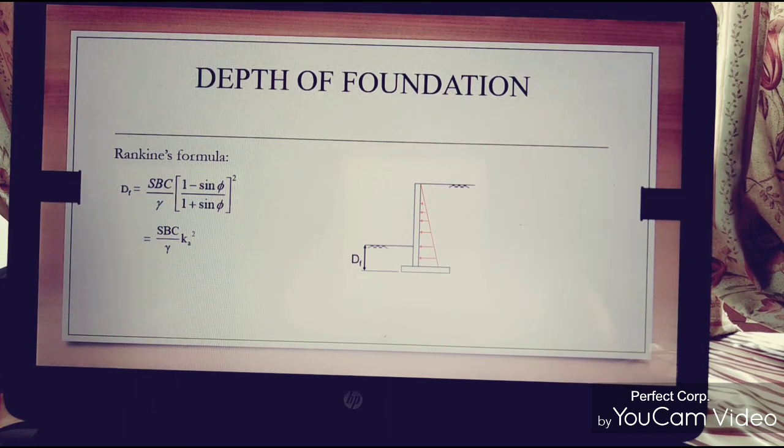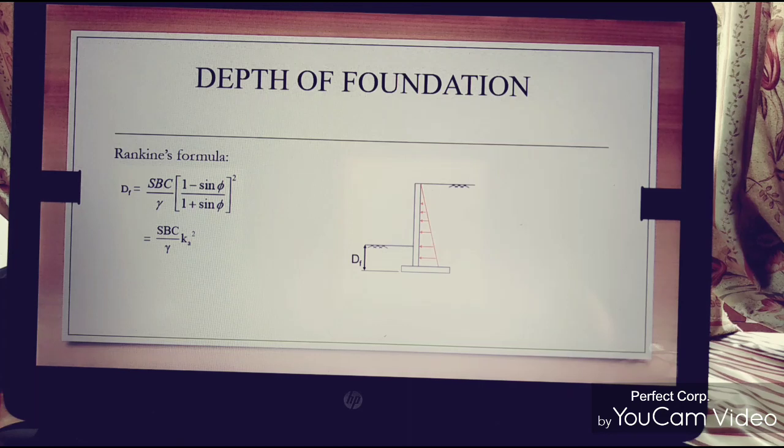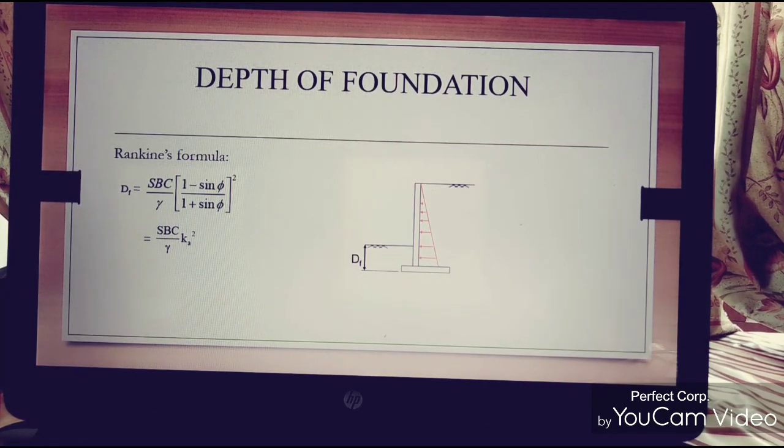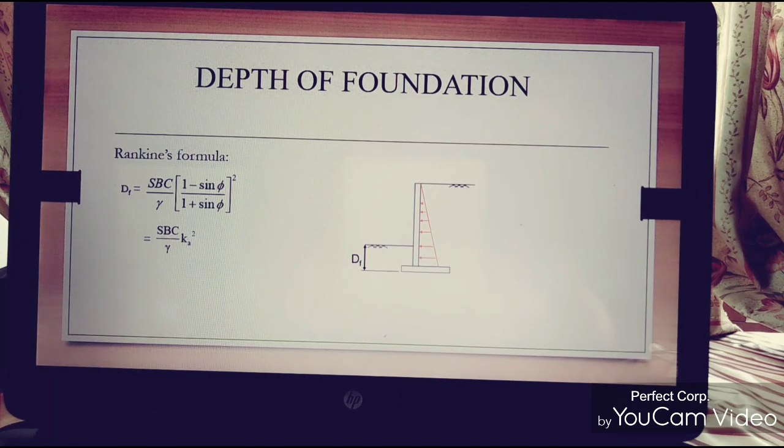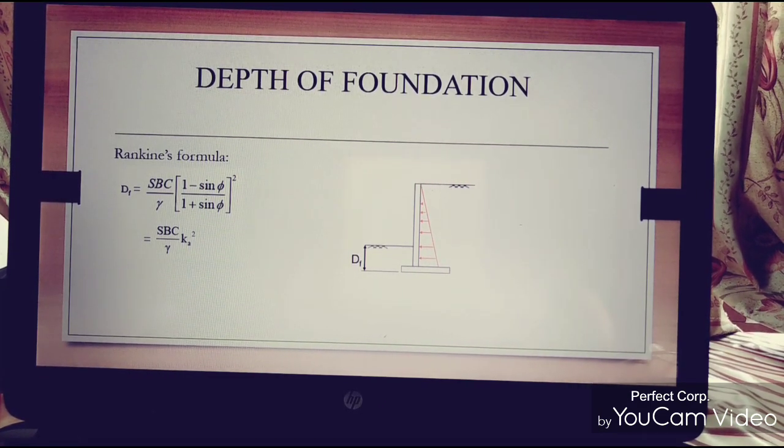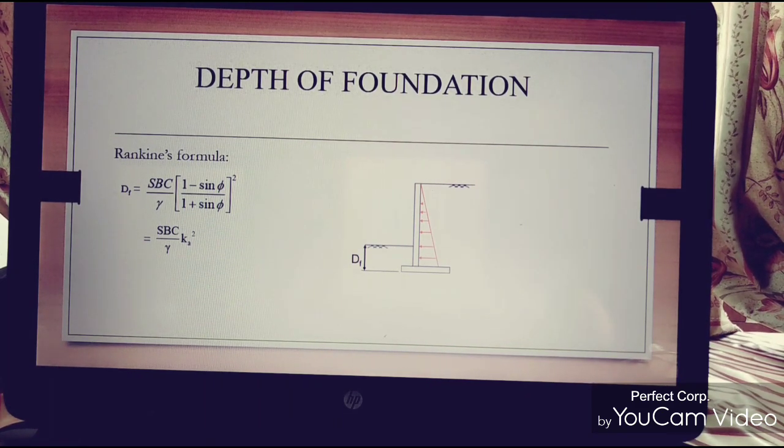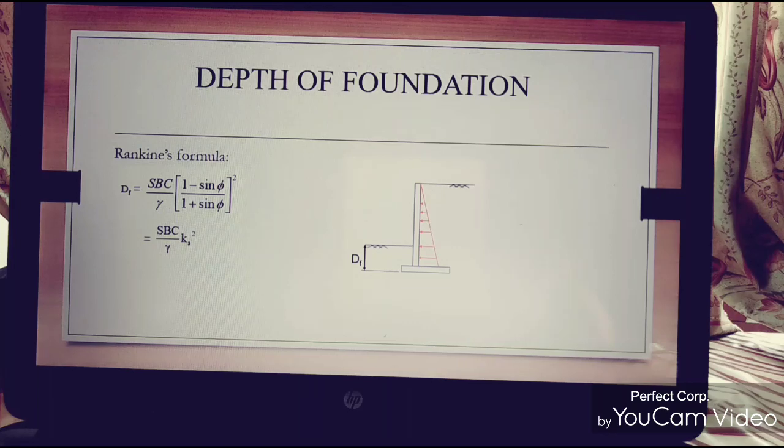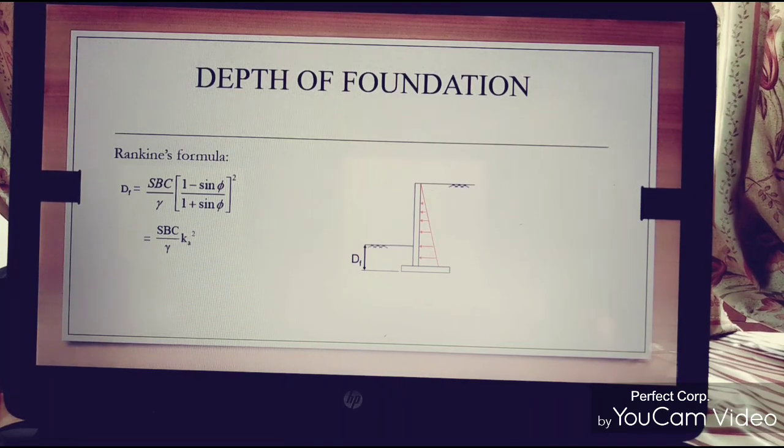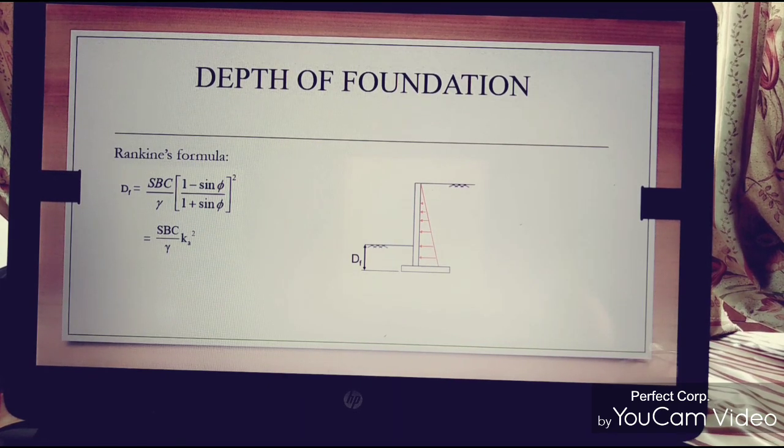Gamma is the unit weight or the density of the soil. Phi is the angle of repose or internal friction angle. Which is equal to SBC divided by gamma K square, where K equals (1 minus sin phi) divided by (1 plus sin phi). This is the coefficient of active earth pressure, that is why K is denoted in our figure.